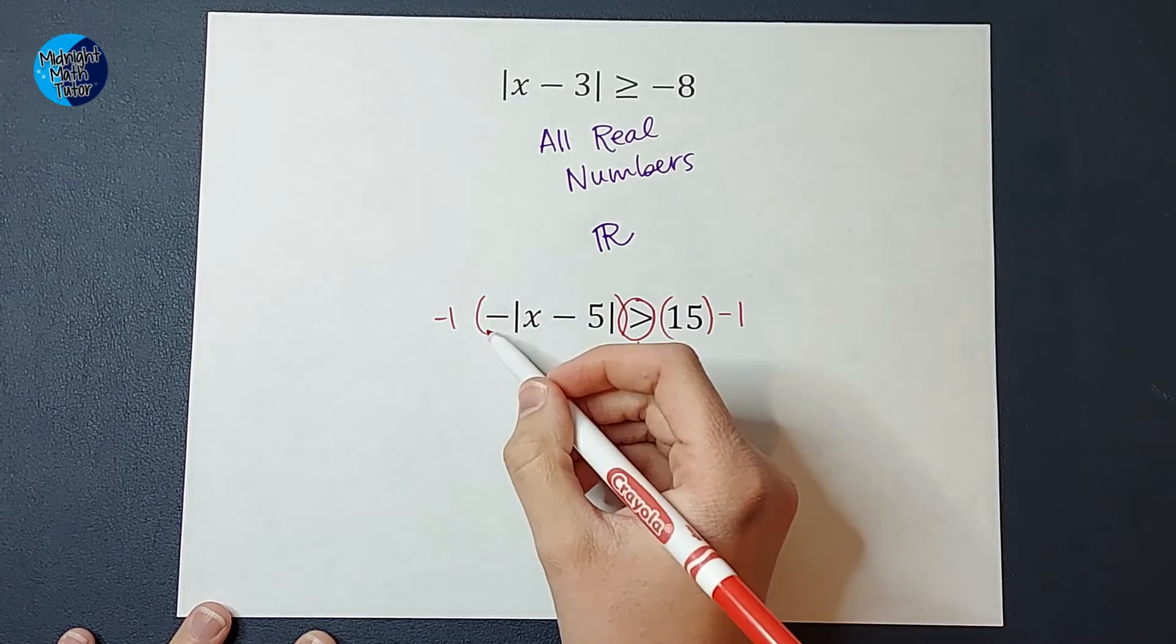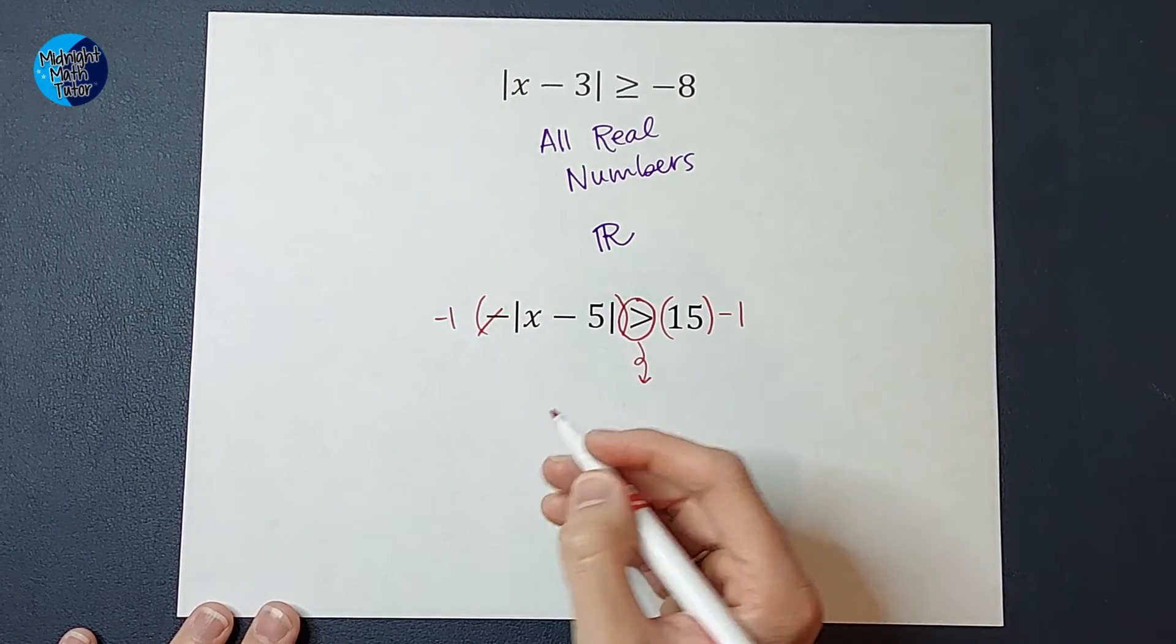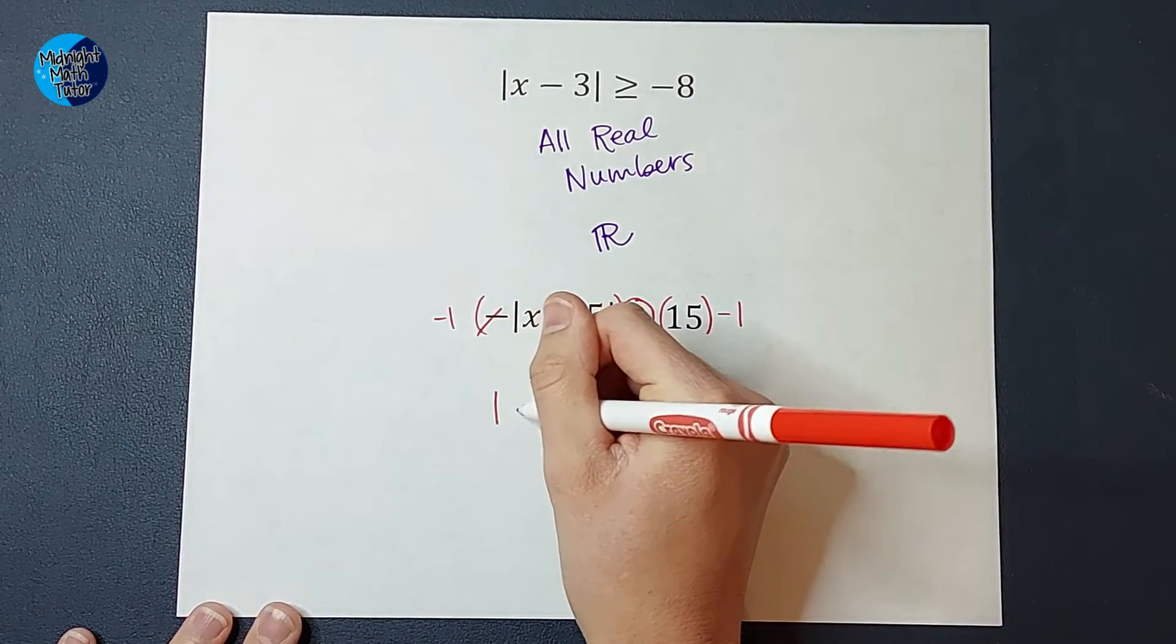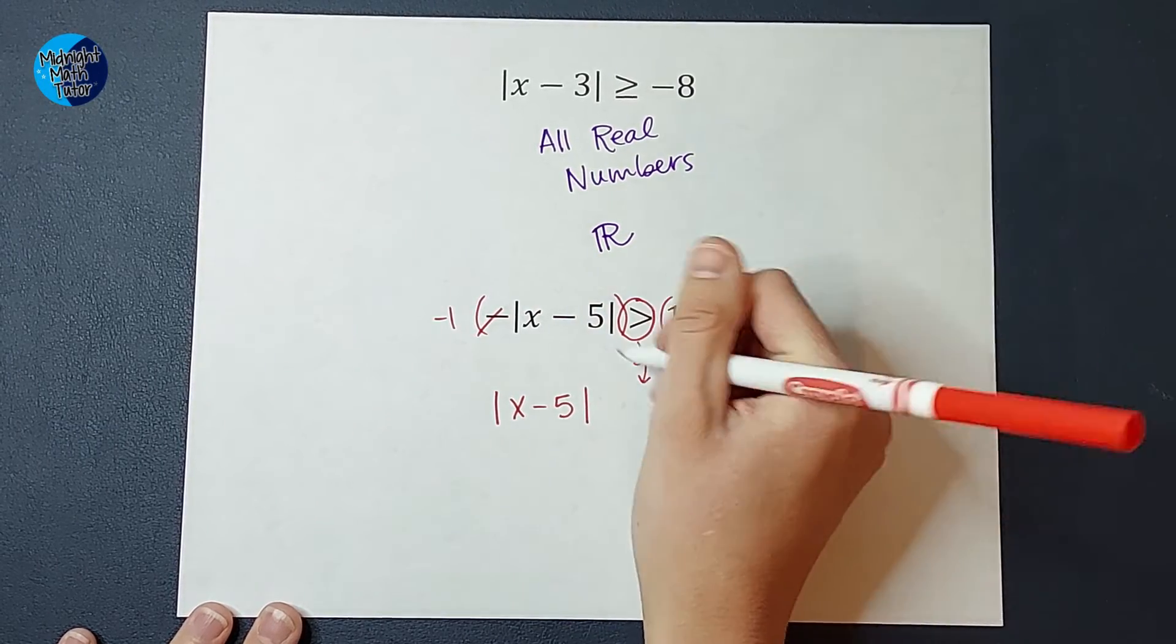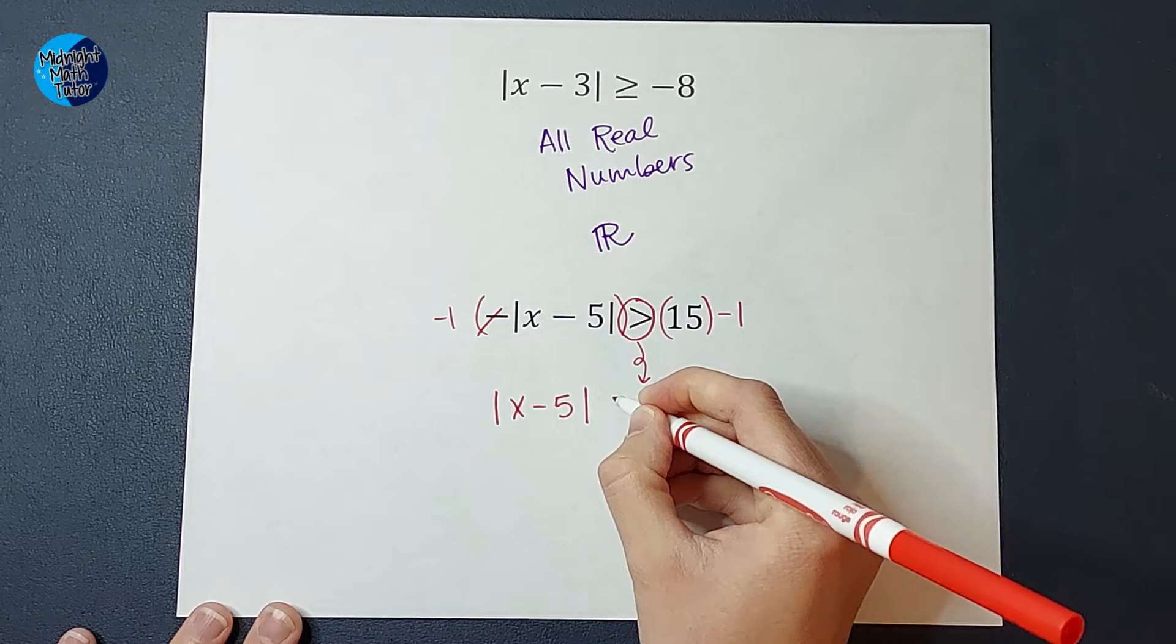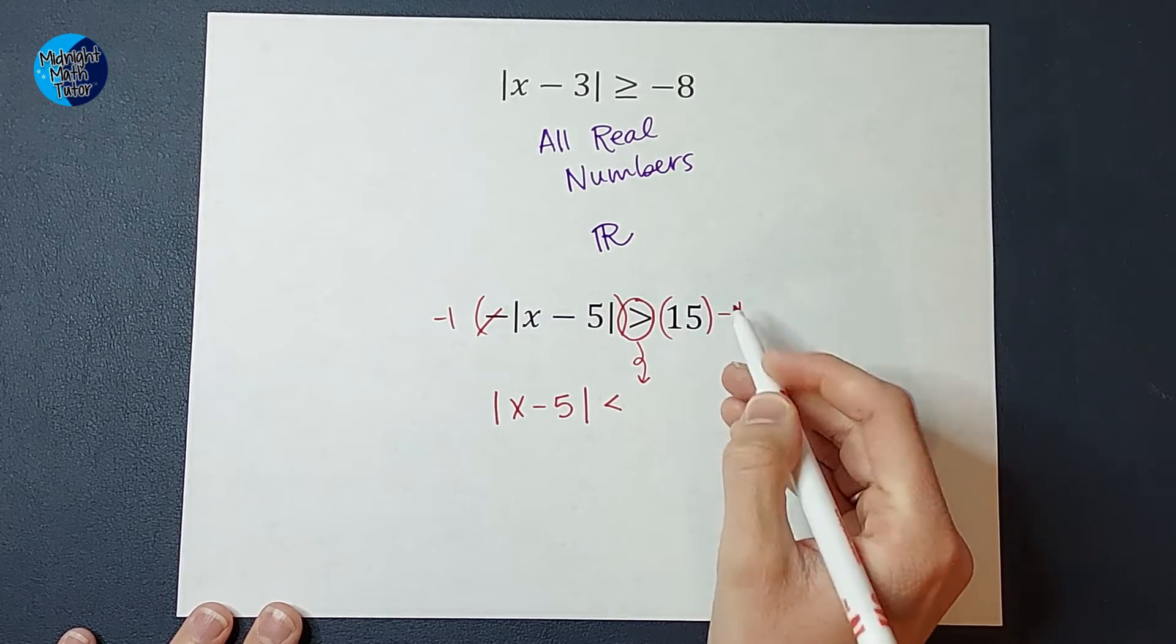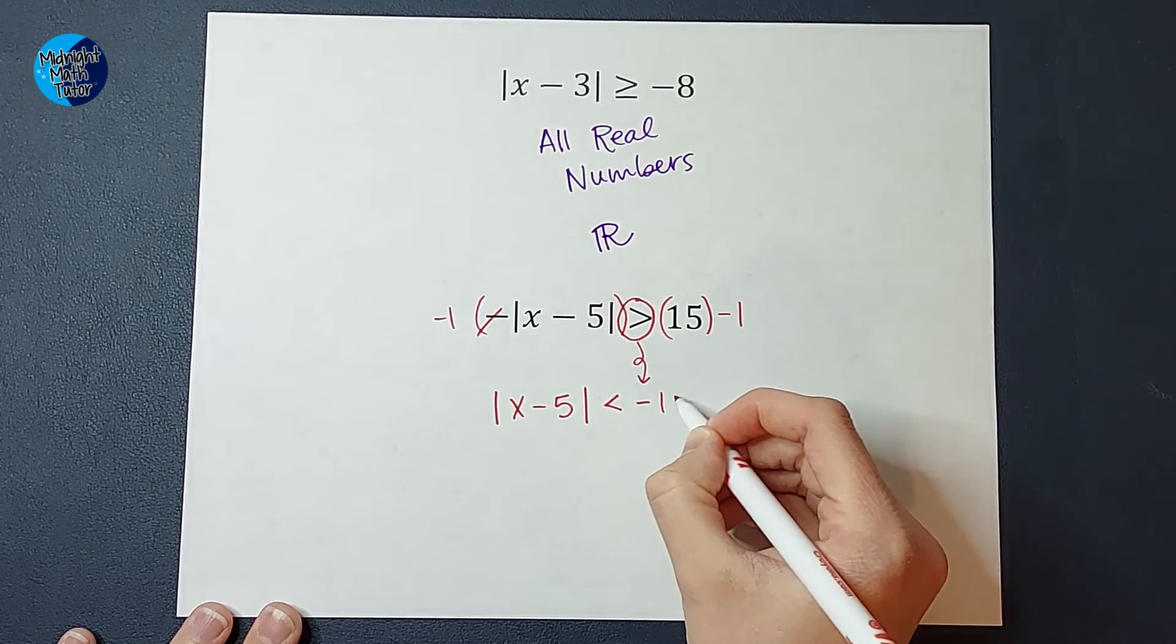Now, when I multiply by that negative one, the negatives cancel. So I'm just left with |x minus 5| over here. I flip that sign. So it's going to be less than 15 times a negative one is a negative 15.